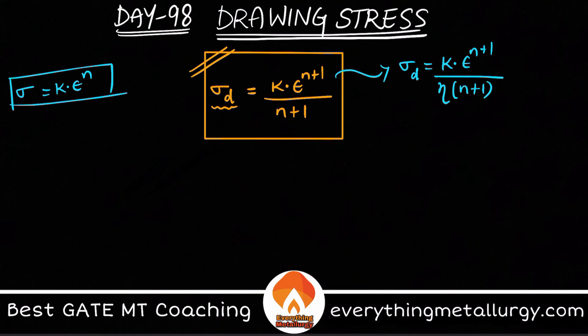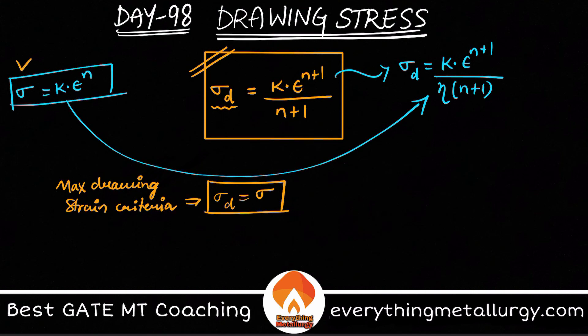So from here, if you just put this value over here, we get the maximum drawing strain criteria. This happens when my sigma d, the drawing stress, becomes the flow stress, that is sigma.